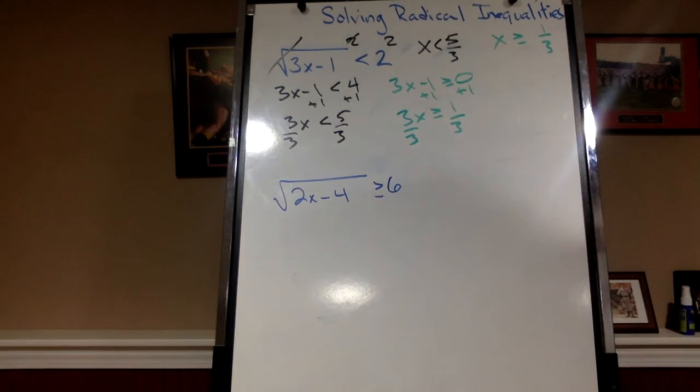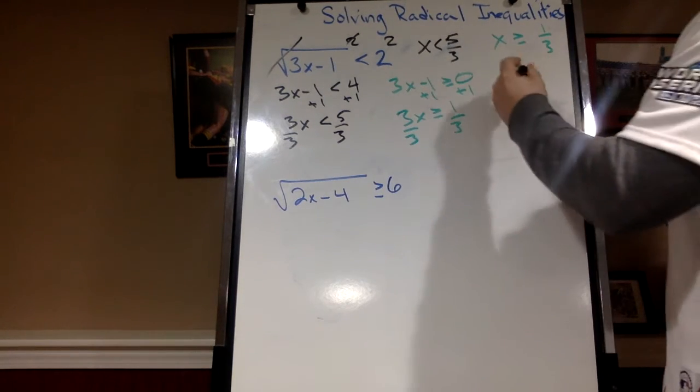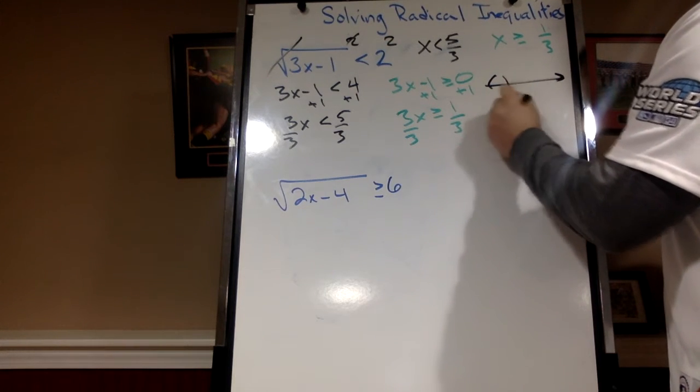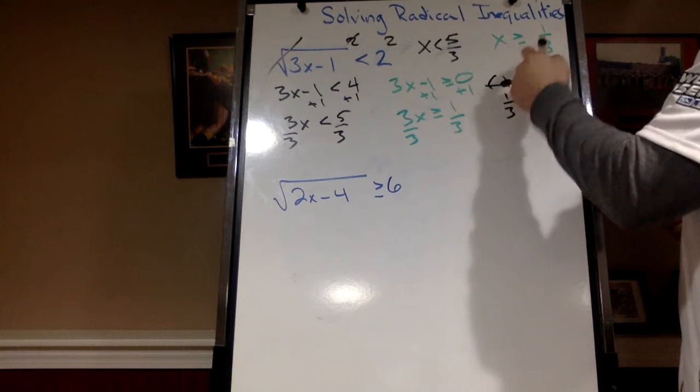So now we have to put those together. So in order to see it best, let's graph them. Alright, 1 third is the smallest. And that or equal to. So it's a solid dot.